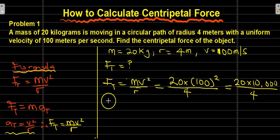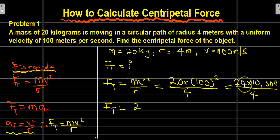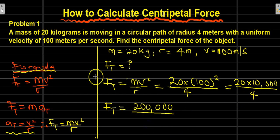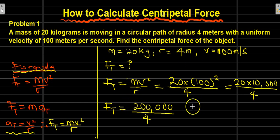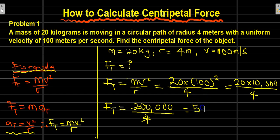Therefore, F of t is equal to 20 times 10,000, which gives us 200,000, all over 4. If you divide 200,000 by 4, you will have 50,000.